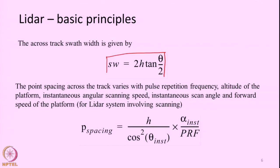This is with respect to airborne platforms. Spaceborne platforms currently in operation generally do not do any scanning — they just send pulses at nadir, so the cos²(θ_inst) correction may not be needed. The footprint depends on the flying height and the beam divergence, producing a circular footprint on the ground. For systems with a scanning mechanism, the swath width is given by 2h·tan(θ/2), where θ is the total scan angle of the system, while θ_inst is the instantaneous scan angle at each range measurement.